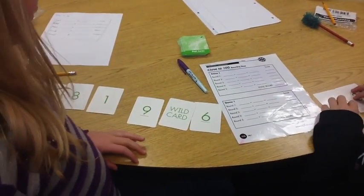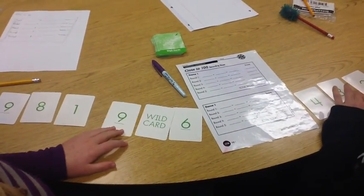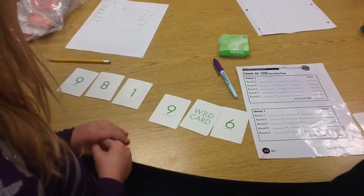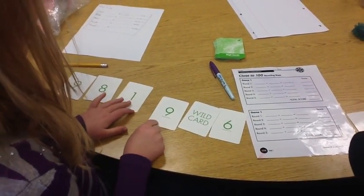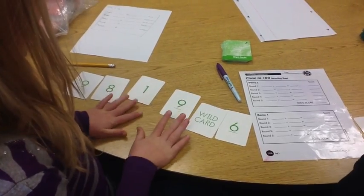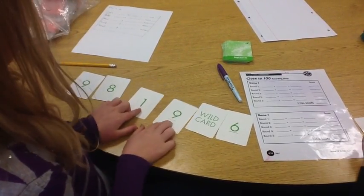And then you try to get as close to 100 as you can. And in our class, how we do it is we have to try to find a way to make 10, and I see one in here. It's nine and one.